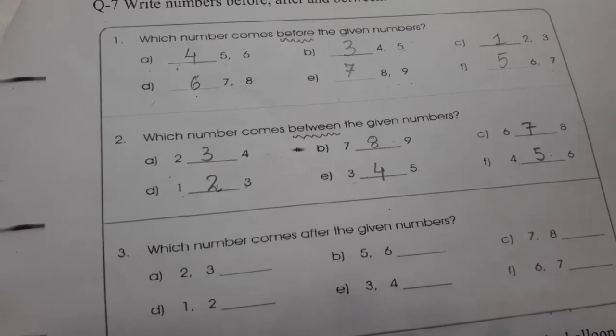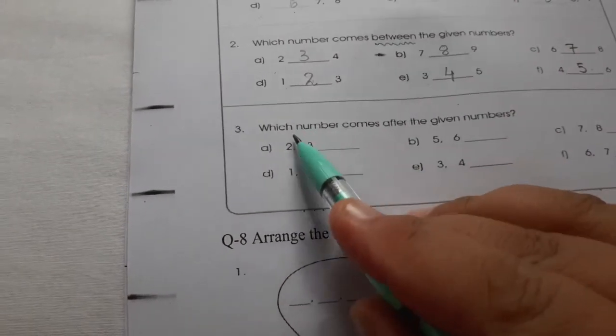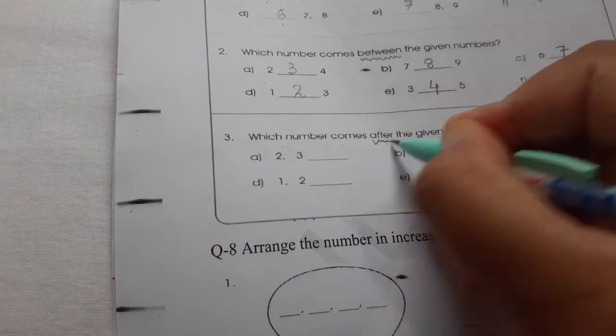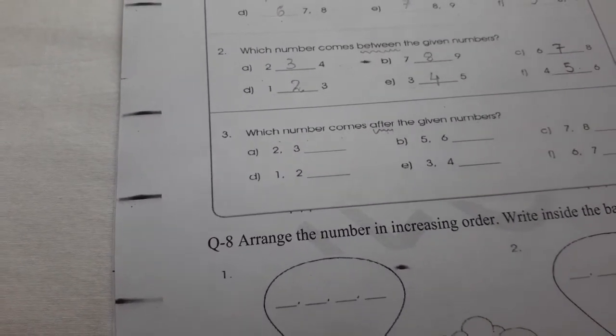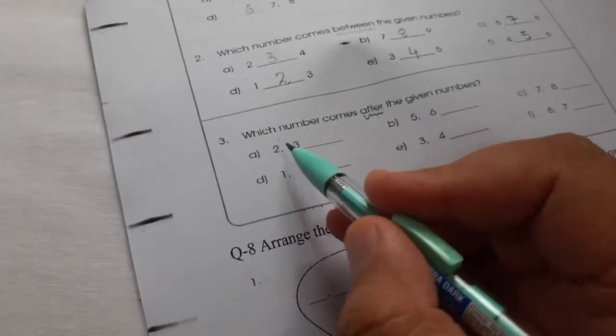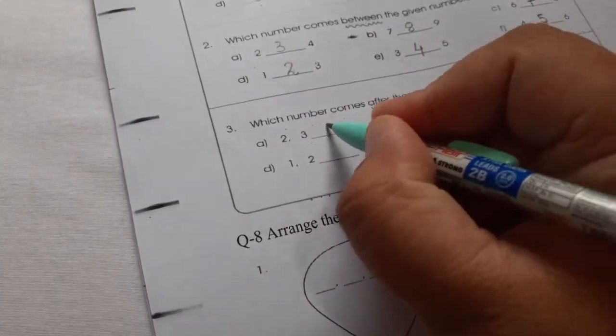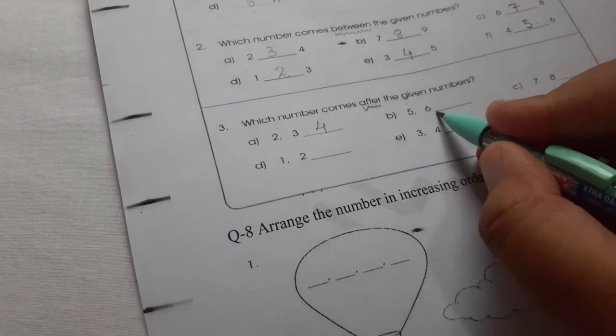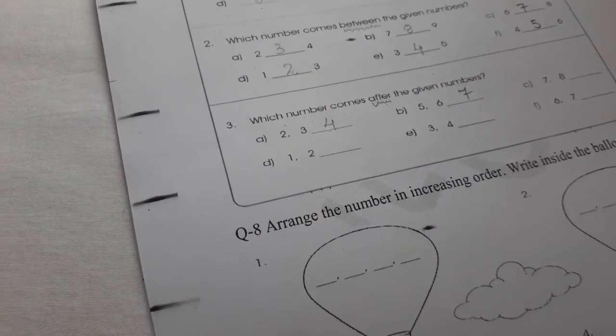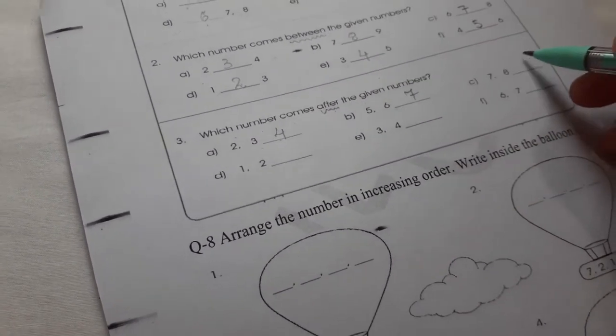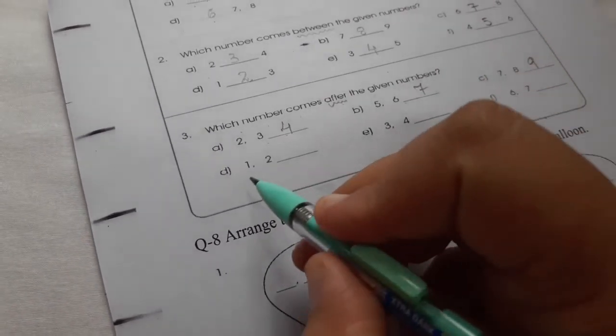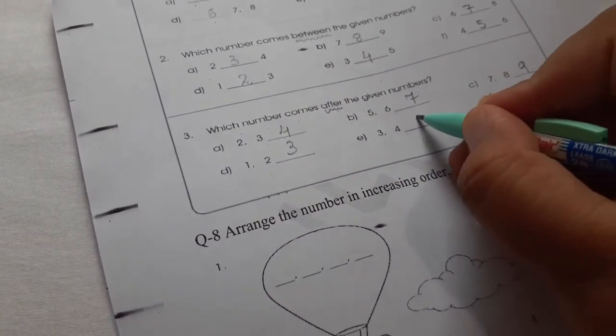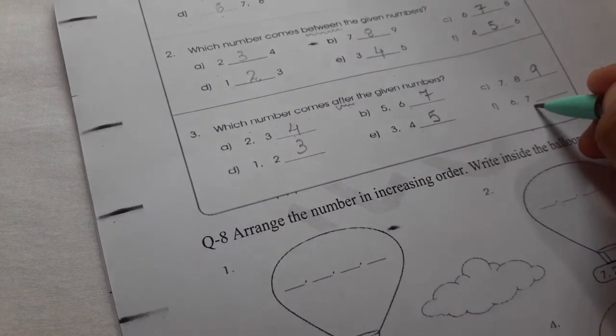Let us go to 3rd question. Which number comes after the given numbers? Underline after. After means the next number. Here we go to question 3, A is 3, 4, so 5. B, 5, 6, yes 7. C, 7, 8, so 9. D, 1, 2, so 3. E, 5, 6, so 7, and then 8.